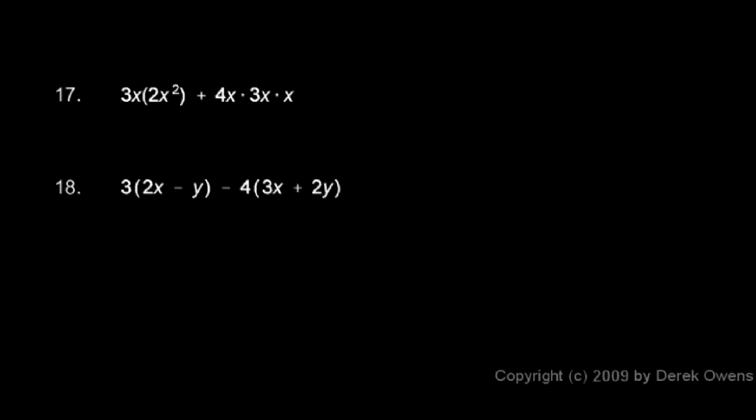Number 17, 3x times 2x squared plus 4x times 3x times x. Well, there are two terms here. We're going to start by simplifying each term.